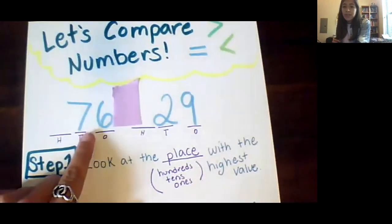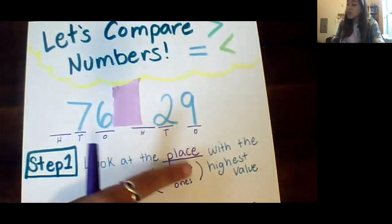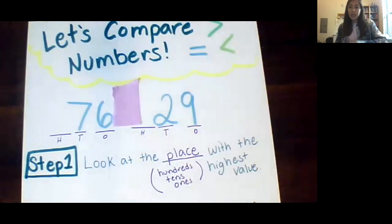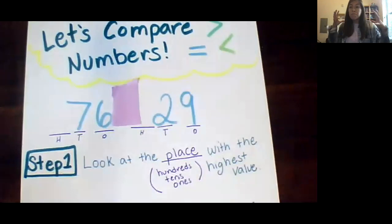So let's take a look at my anchor chart here. When we compare numbers, there are some things we really need to be on the lookout for. So let's go ahead and begin. I want to compare the numbers 76 and 29. Step number one is look at the place with the highest value. That means we want to look at the place. So our hundreds, tens, and ones.